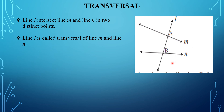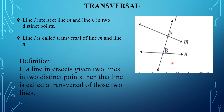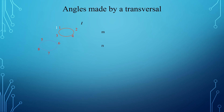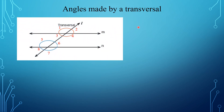The definition of transversal: if a line intersects two given lines at two distinct points, then that line is called the transversal of those two lines. Now students, this transversal forms many angles. In this figure, line M and line N are parallel lines and line L is the transversal line.